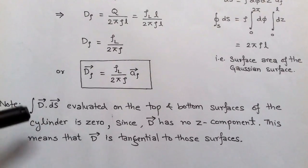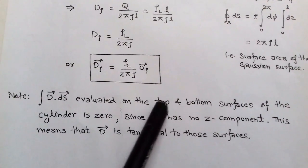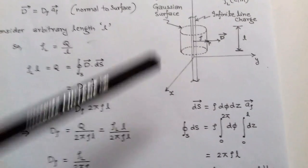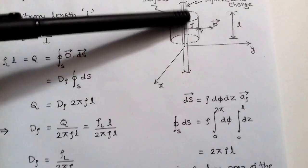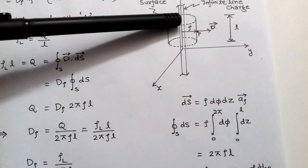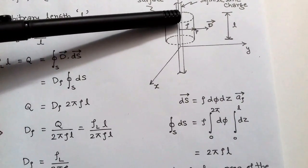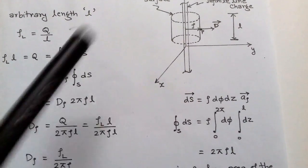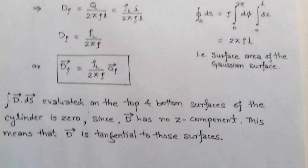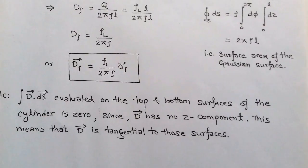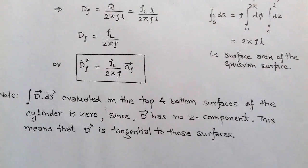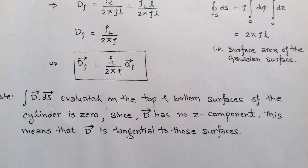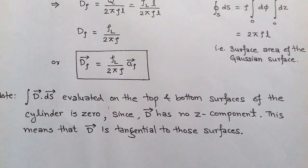The surface integral of D · dS evaluated on the top and bottom surfaces of the cylinder is zero, because at the top and bottom surfaces D has no z-component. This means D is tangential to those surfaces, the angle between D and dS is 90°, and we get only the ρ-component contributing.